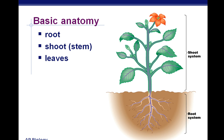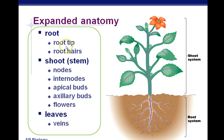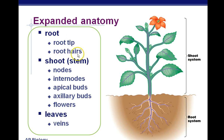The basic anatomy of a plant is a root, shoot, and leaves. The root has two basic parts: a root tip, which is the place where we have rapidly dividing cells for growth, and root hairs to increase surface area for absorption of minerals and nutrients, which we'll talk about in future chapters.